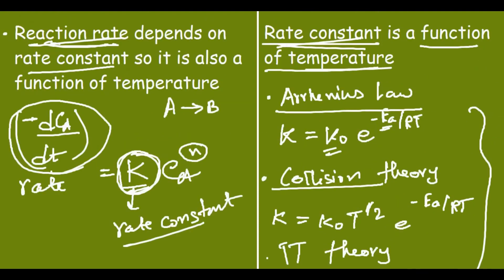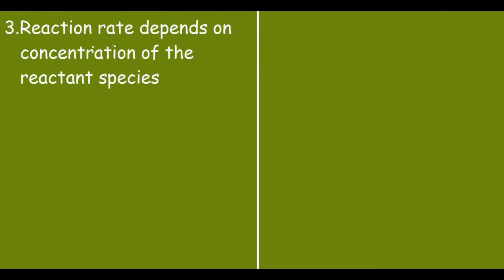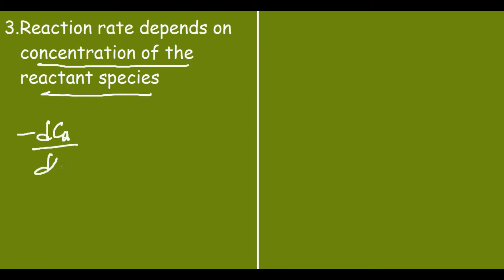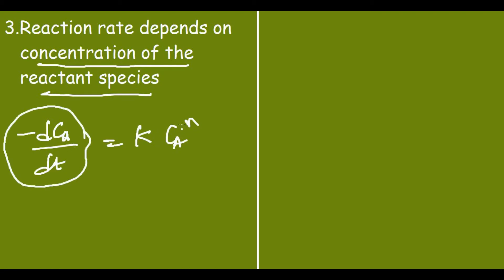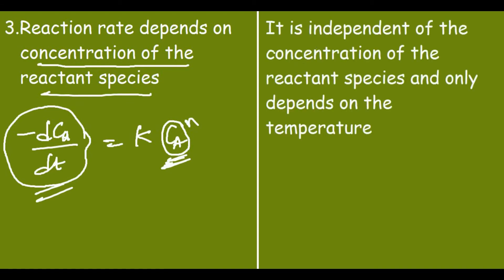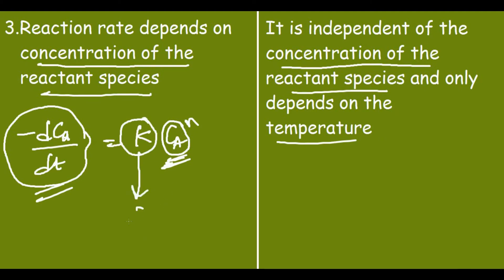The reaction rate depends on the concentration of the reactant species. From the rate equation, −dCa/dt = k·Ca^n, the reaction rate is clearly a function of reactant concentration. However, the rate constant is independent of concentration — it only depends on temperature and does not change with respect to the concentration of the reactant species.